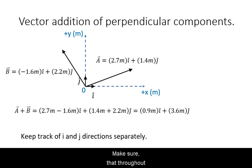Make sure that throughout, you remember that this is a vector sum. You cannot algebraically add together the magnitudes only. The final result of the sum will still be a vector with i and j components.